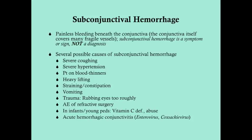Causes of subconjunctival hemorrhage include severe coughing (such as in a patient with COPD), severe hypertension, blood thinners (for example, a patient with an INR of two to two and a half), heavy lifting, straining, constipation, and vomiting — all of these increase intra-abdominal pressure that transfers upward. Trauma like rubbing the eyes too roughly can also destroy those vessels, as can refractive surgery as an adverse effect. In young children it can be a sign of vitamin C deficiency or abuse. There is also acute hemorrhagic conjunctivitis, caused by enterovirus or coxsackievirus.